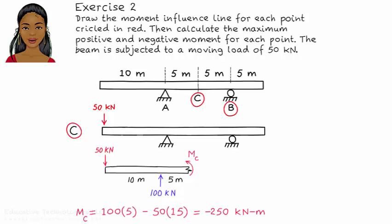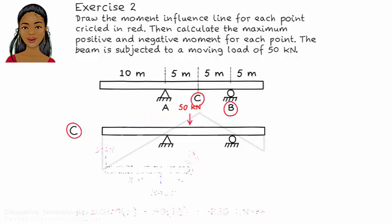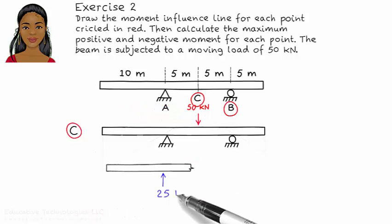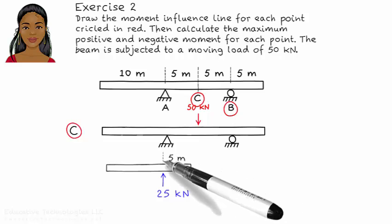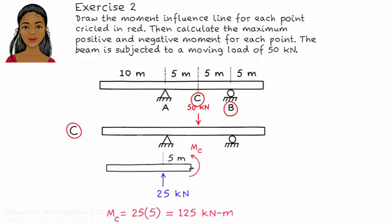To determine the magnitude of the maximum positive moment, place the load at C and analyze the beam. This gives us a bending moment of positive 125 kNm.